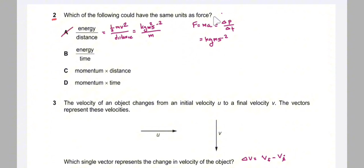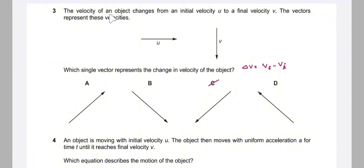Question 2: which of the following could have the same unit as force? Force equals mass times acceleration, and also force equals change in momentum divided by change in time. From mass times acceleration, the unit is kg·m/s². The correct answer is A because energy divided by distance: kinetic energy is ½mv², and dividing by distance gives kg·m/s², which equals the unit of force.